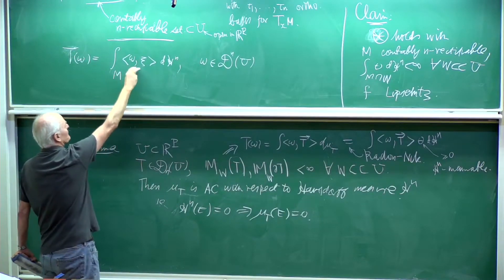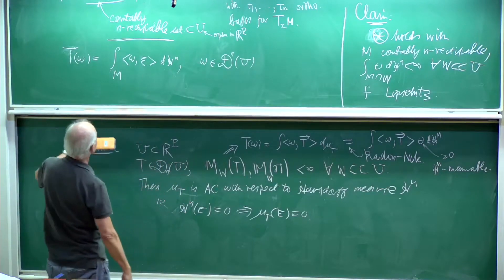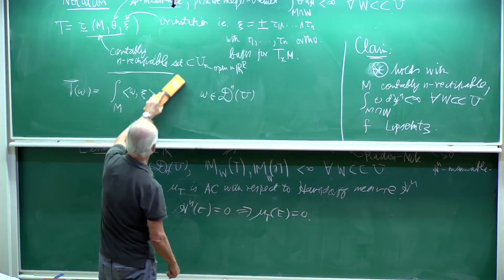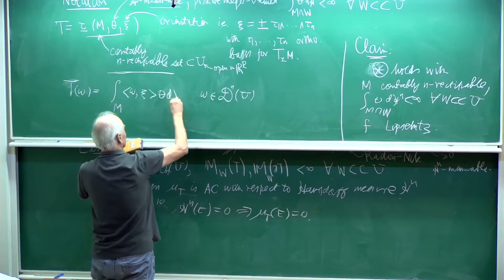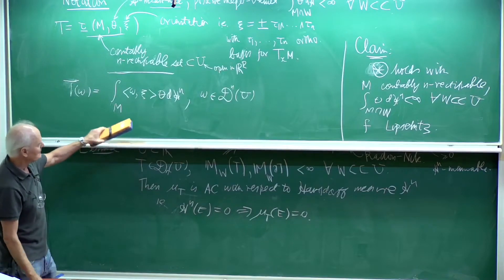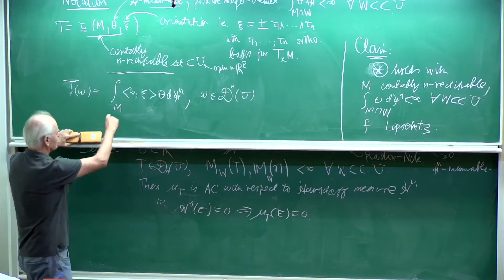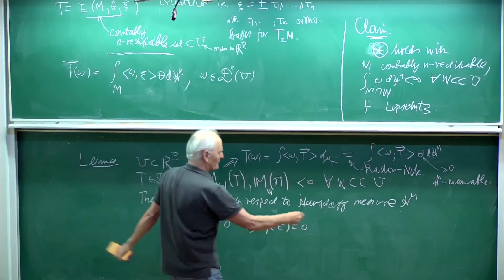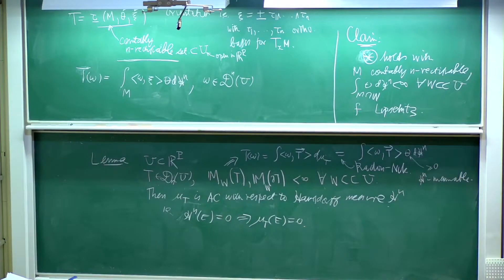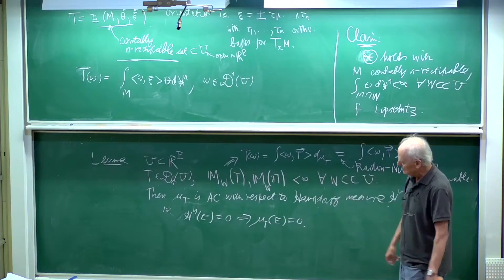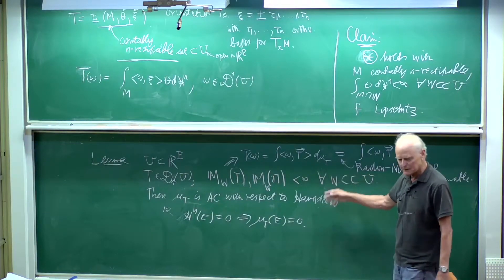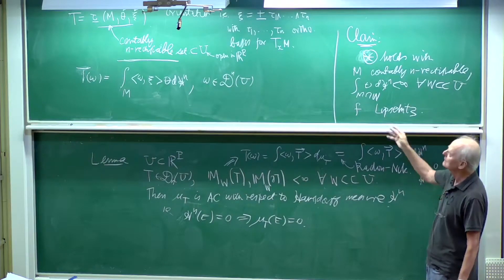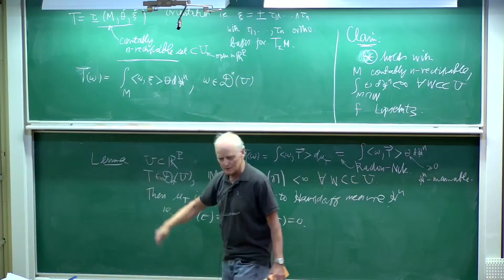So this starts to look like the integer multiplicity current formula, except we don't yet have a rectifiable set. This is a bit more special as far as the measure is concerned. But at least, if you're trying to prove some sort of rectifiability result, this would clearly be a first step, because it takes care of the measure and shows you've got an integral with at least the same sort of structure. So let me give the proof of this.